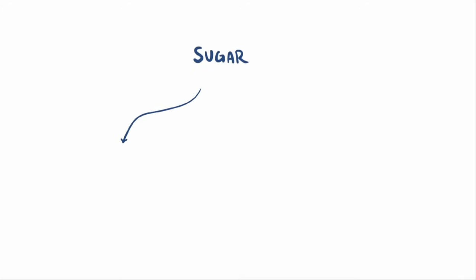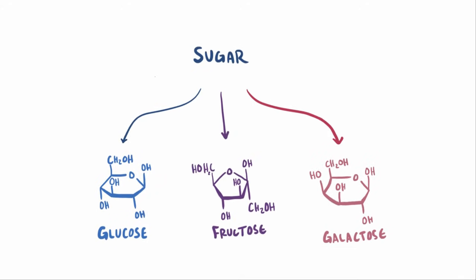The most common forms of sugar are glucose, fructose, and galactose, and these are all types of monosaccharides, meaning they're made up of just one sugar molecule.